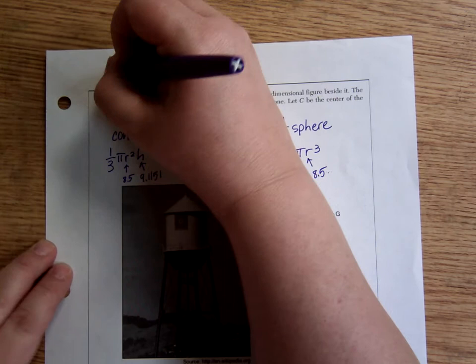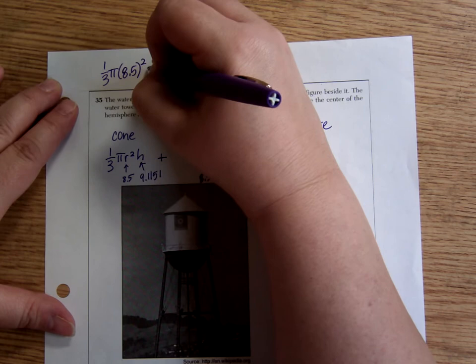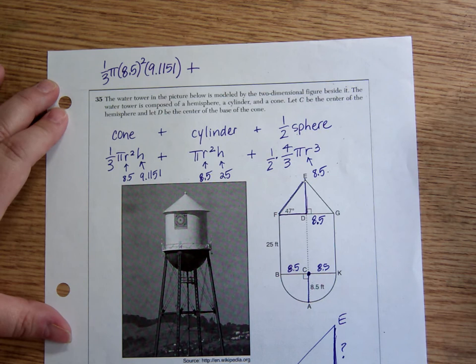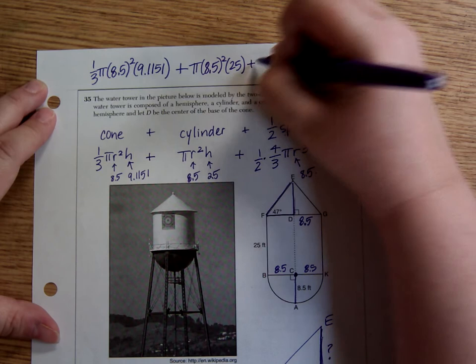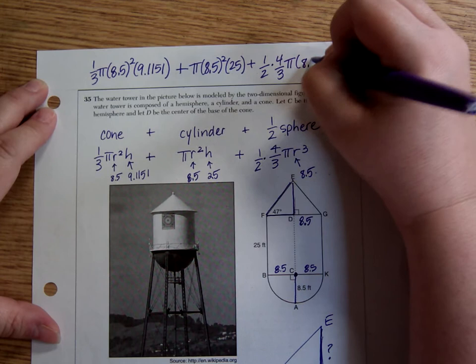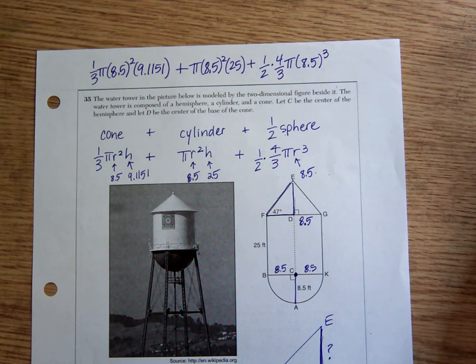One third pi, 8.5 squared times 9.1151. All of that is the volume of the cone. Plus pi times 8.5 squared times 25. All of that is the volume of the cylinder. And finally, one half times four thirds times pi times 8.5 cubed. Don't forget to cube the sphere. A lot of times people do forget with spheres, and they just square it.